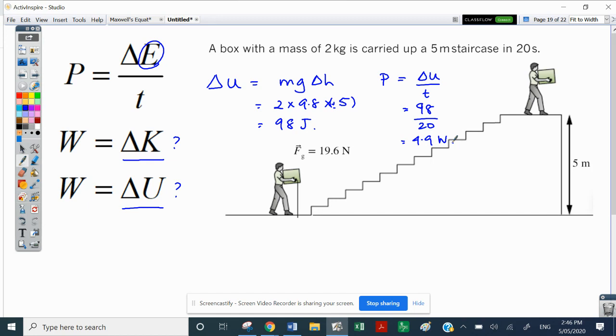So doing that division, you get 4.9 joules per second. So joules per second. That means it's either 4.9 joules per second. You want to use that unit or 4.9 watts. Okay, let's try another one.